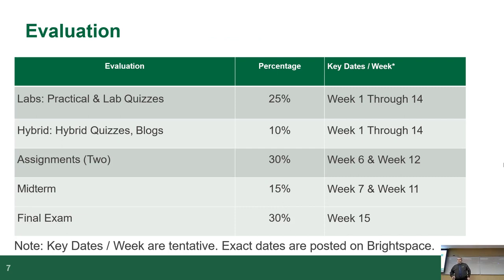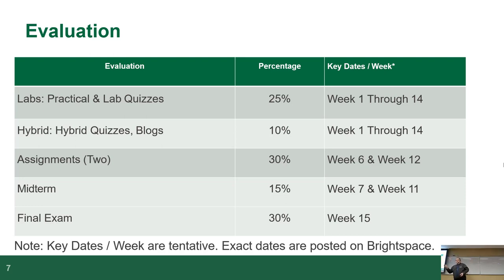The course breakdown is as follows: 25% of your grade comes from labs — each lab is worth 2.5%, and there are 10 labs. 10% is hybrids, which is basically homework with quizzes — four of them at 2.5% each. There are two assignments combined worth 30% of your final grade. The midterm is worth 50% of your grade and the final exam is 30%.